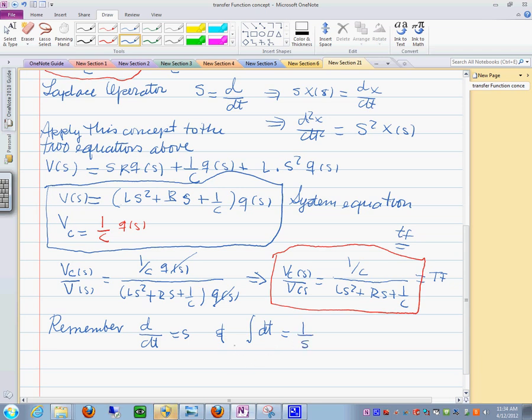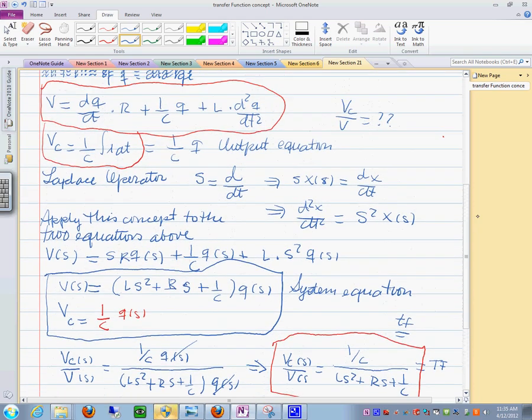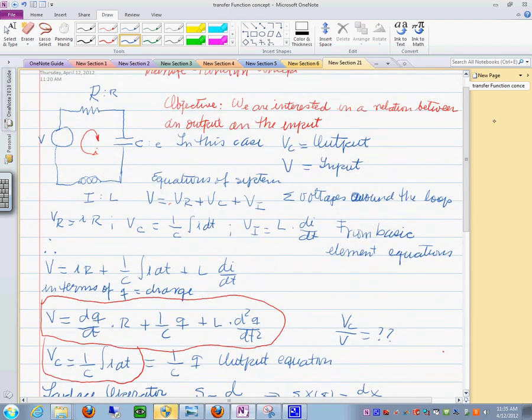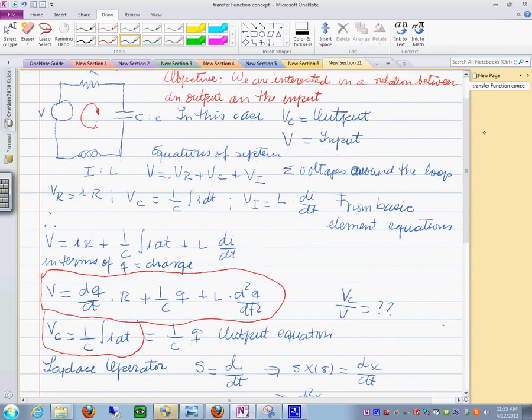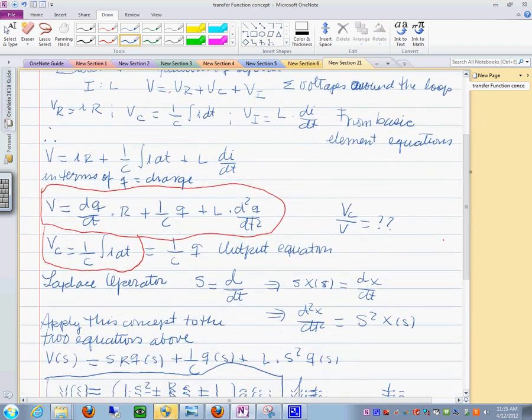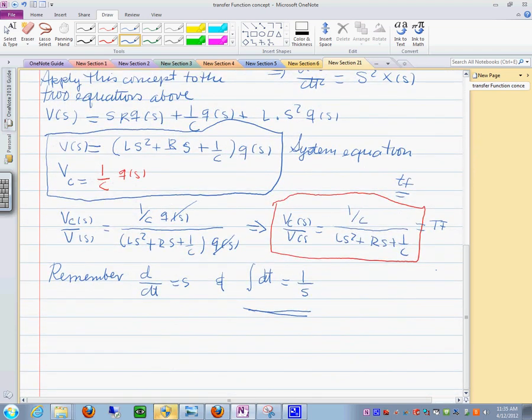Remember this is the Simulink notation. So I think this is very important to remember when we derive it by hand. What I have done is I have derived this by hand and I got this transfer function. Now if we use the bond graph model to do this...